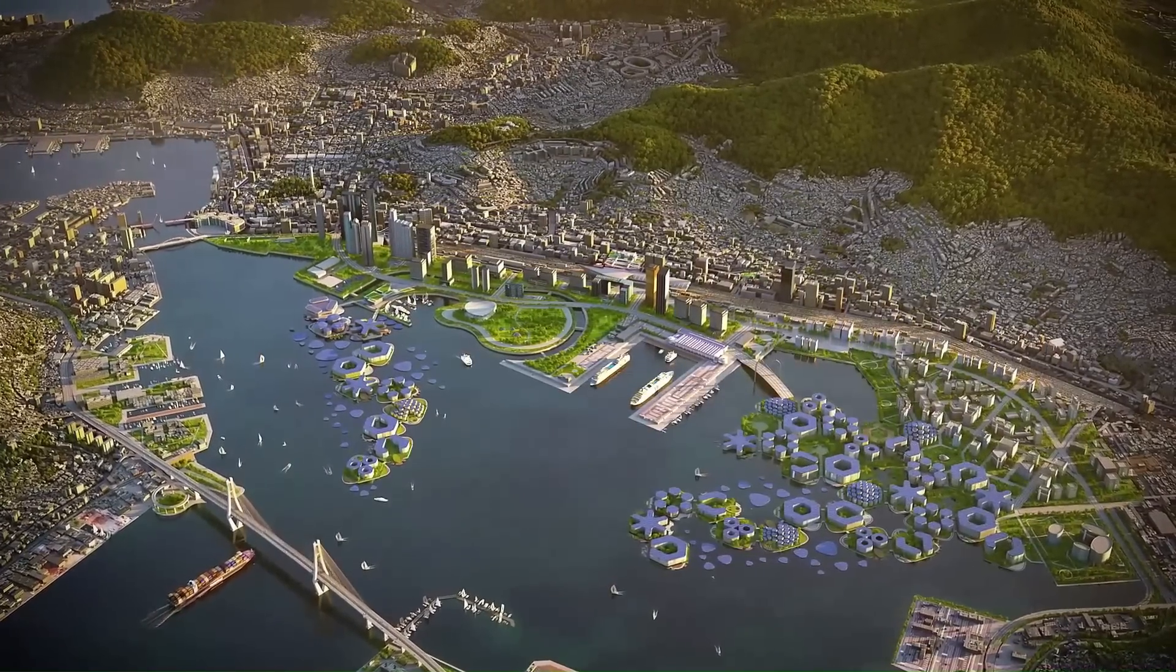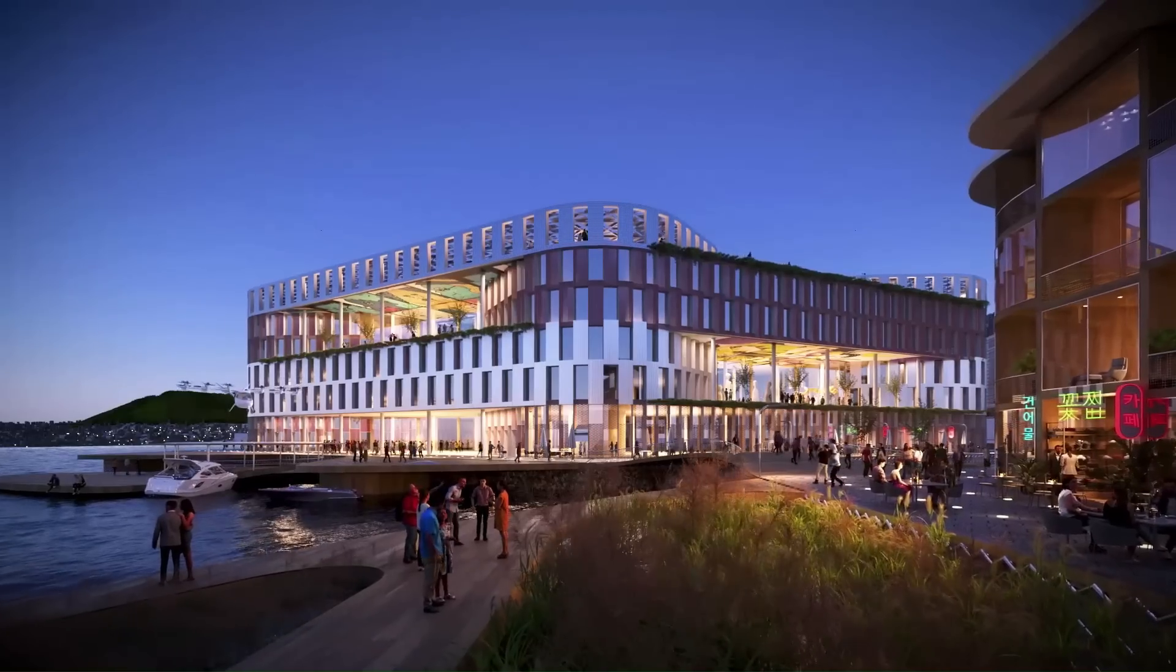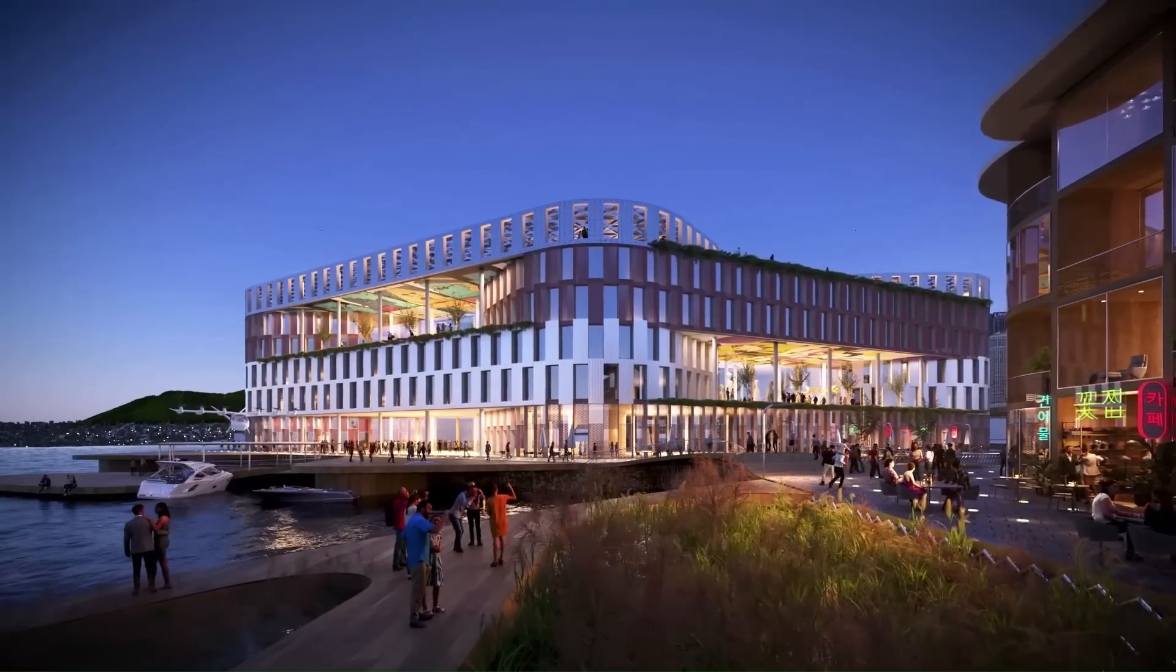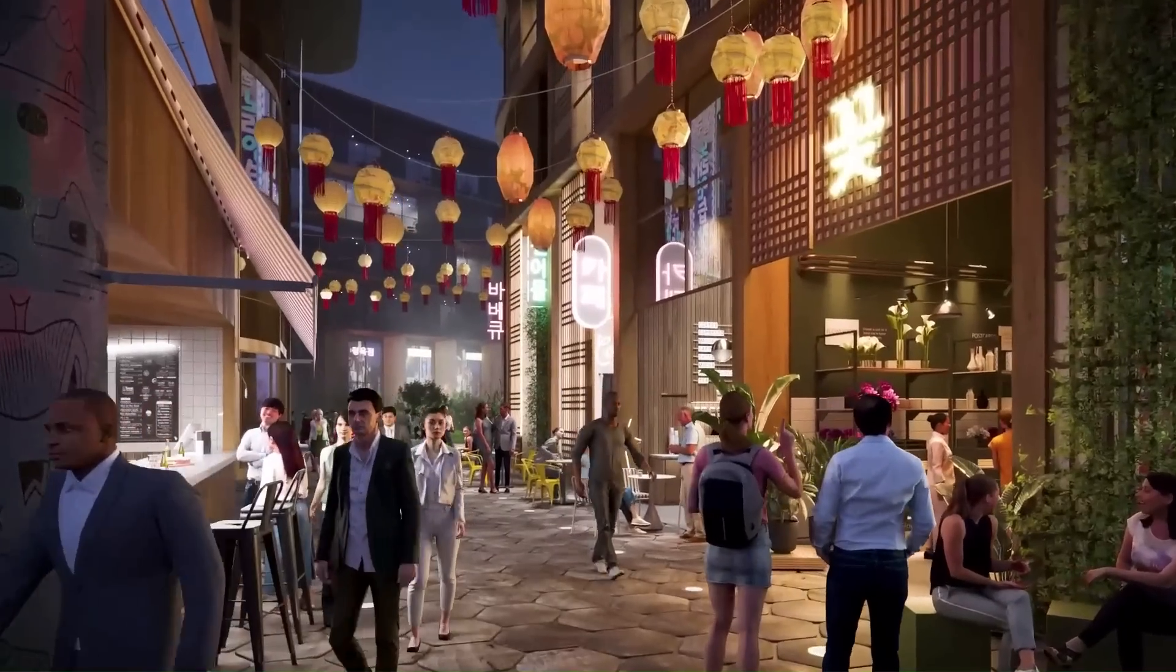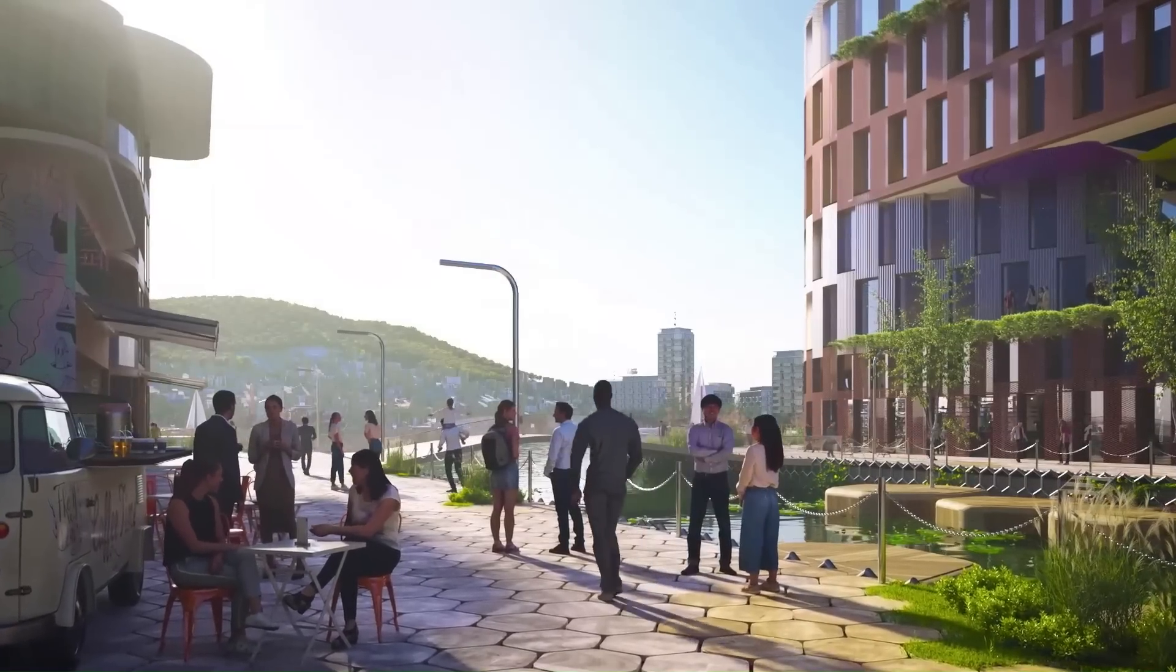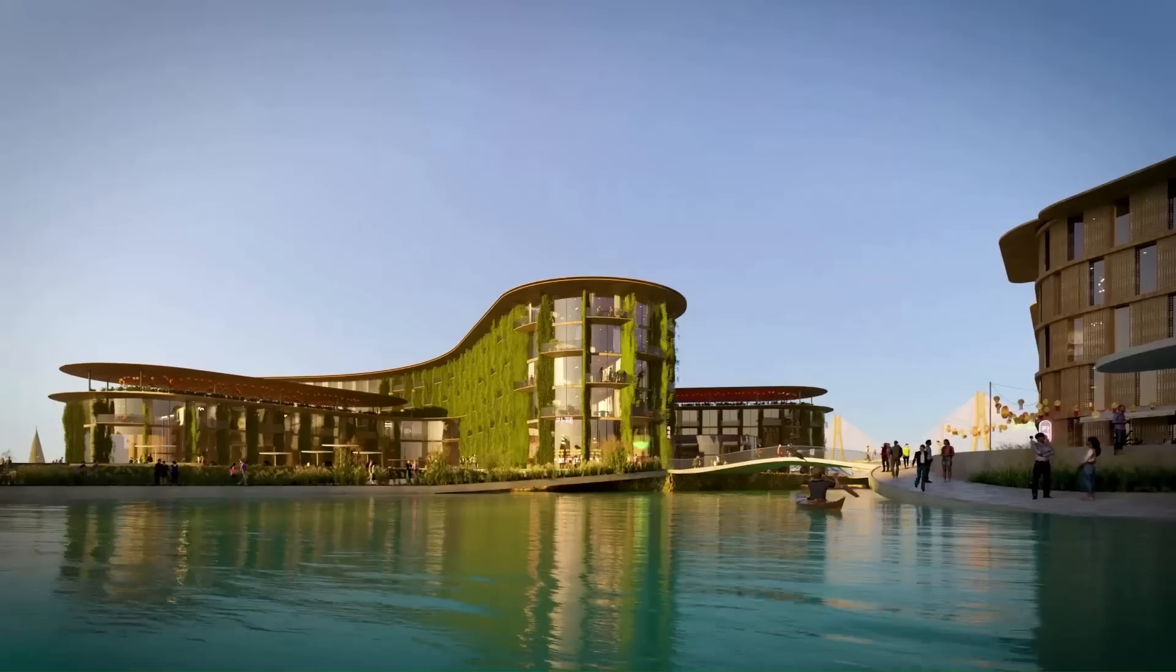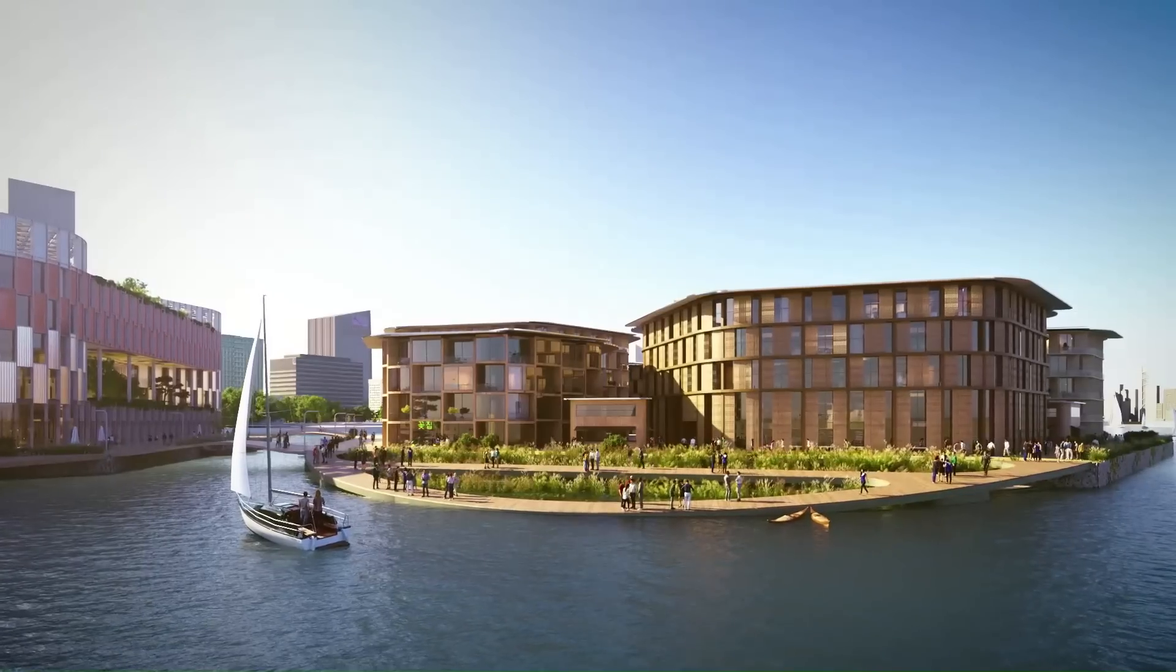A sustainable floating city prototype named Oceanix Busan is set to be built in South Korea next year, creating a livable metropolis that adapts to rising sea levels. Visuals of the project, designed by BIG architects, display a star-shaped community for 12,000 residents, constructed from self-healing bio-rock that supports ocean habitats.